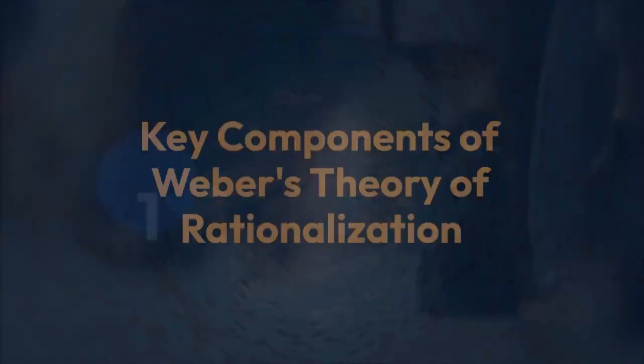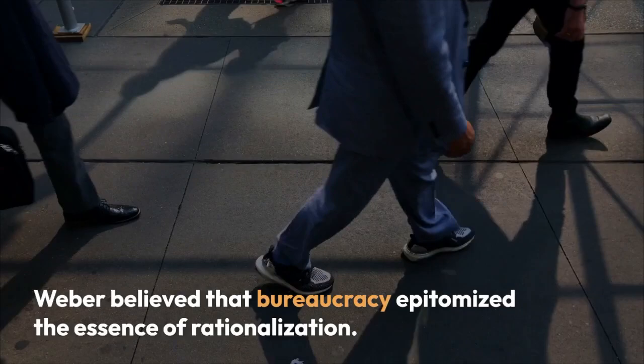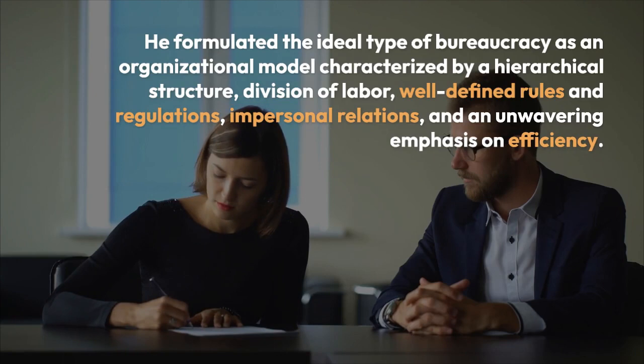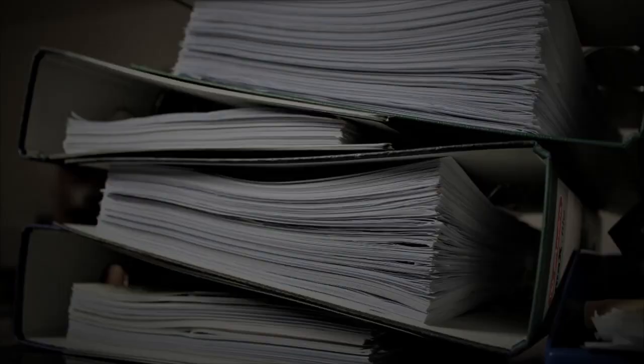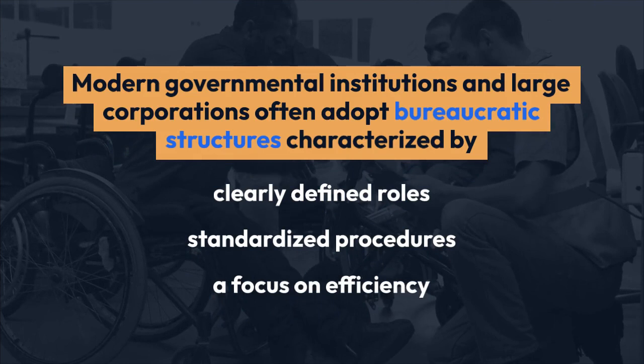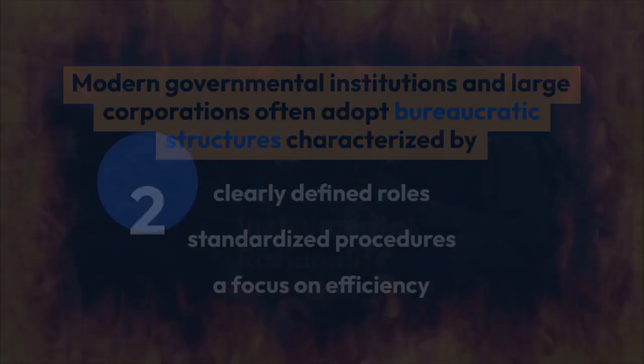Key Component 1: Bureaucracy as an Ideal Type. Weber believed that bureaucracy epitomized the essence of rationalization. He formulated the ideal type of bureaucracy as an organizational model characterized by a hierarchical structure, division of labor, well-defined rules and regulations, impersonal relations, and an unwavering emphasis on efficiency. While bureaucracy offered numerous advantages, Weber also acknowledged its potential for dehumanization and alienation. For example, modern governmental institutions and large corporations often adopt bureaucratic structures characterized by clearly defined roles, standardized procedures, and a focus on efficiency.